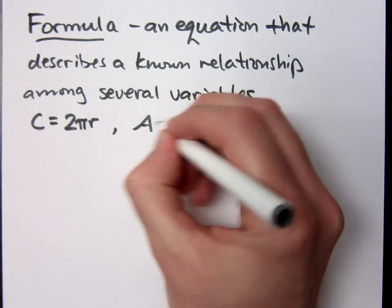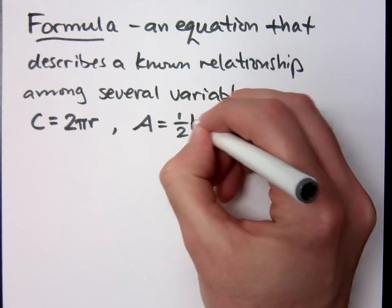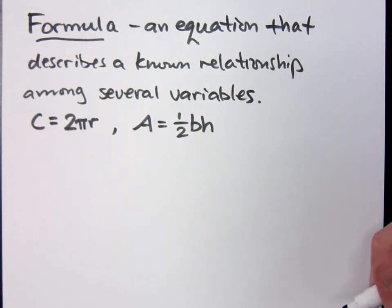The area of a triangle is A=½bh, one half the base times the height. It's a formula, right? The base and the height and the area, these are guys that you can know, and it tells you how everything is related.